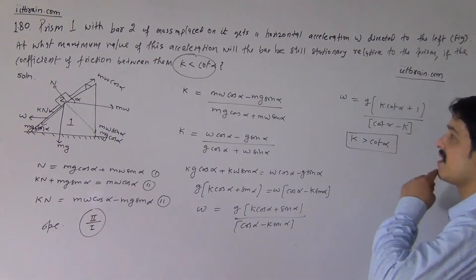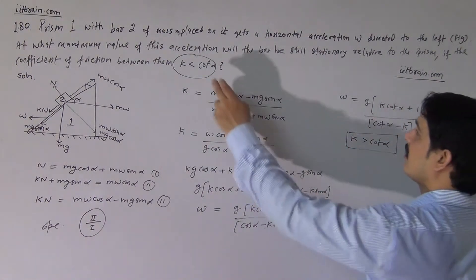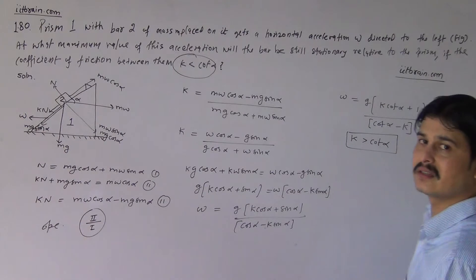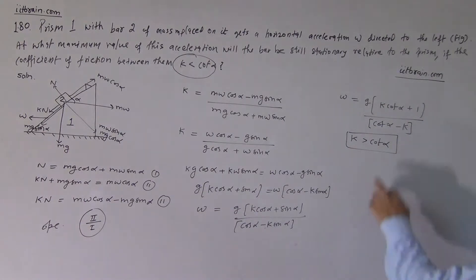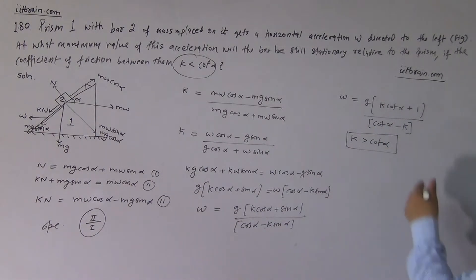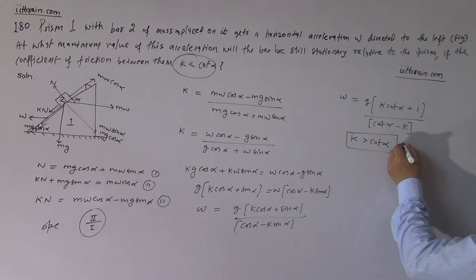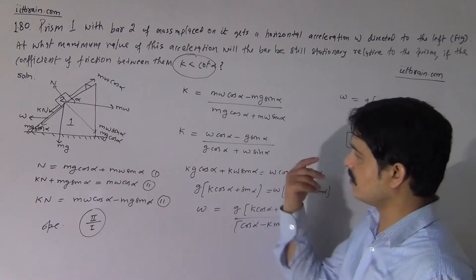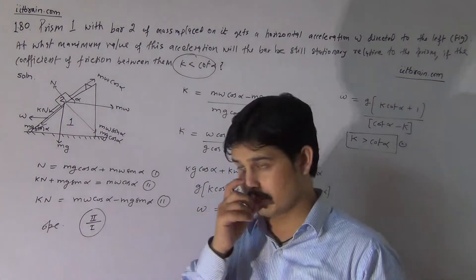We need to confirm the condition that K is less than cot(alpha). If K is greater than cot(alpha), then the denominator becomes negative and the problem loses physical meaning in this format. So K < cot(alpha) is a necessary condition for this problem to be valid.